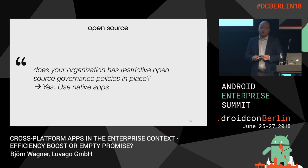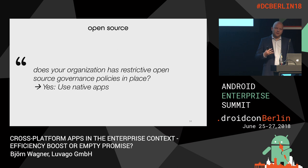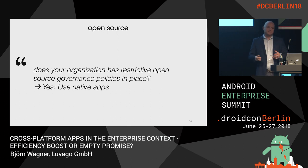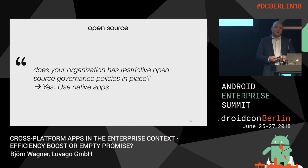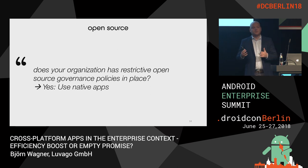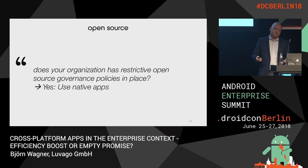The next point only applies to enterprise organizations. A lot of customers have really restricted open source processes and policies. When you want to use an open source library, you need to enter it in a system and get legal to approve it, and you have to do that for each release again and again. A lot of native apps also use open source technology, but in those organizations they already have established processes for those native technologies. In newer cross-platform technologies, those established processes are missing. I had the experience in the past that we spent a good part of a project dealing with enterprise processes around open source certification, which can be quite annoying and slows the project down.